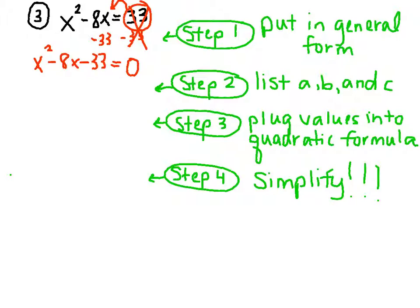Step 2 is to list a, b, and c and what they're equal to. a is the coefficient in front of x squared, so that's 1, so a equals 1. b is the coefficient in front of x, that's negative 8. And c is the constant at the end, so c is negative 33. So that's step 2.